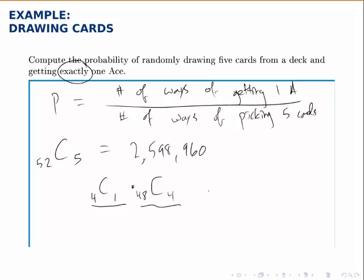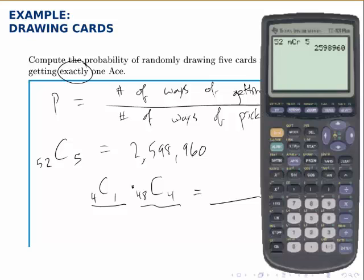So, we calculate 4C1 and 48C4 and multiply them together. On the calculator, we type in 4 math probability NCR 1 and 48 math probability NCR 4.